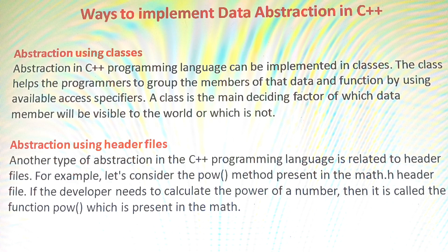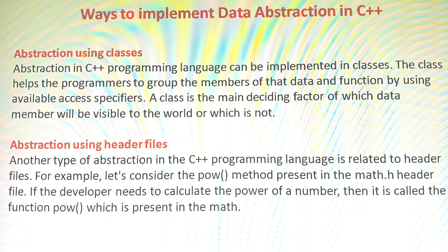The second part is abstraction using header files. Through header files also we can implement data abstraction. Many header files are there in C++: string header files, input/output header file, standard library function header file, and mathematical header file. If you want to do any mathematical function in C++ programming, we have to include the math.h header file because all the execution steps are present in the math header files - including the code for the power method.